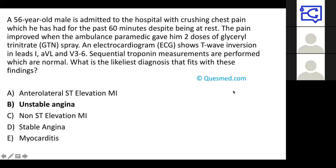We have a 56-year-old who's come in with crushing chest pain for the past 60 minutes at rest. The key is whether or not the pain is at rest — because if someone has pain on exertion, that's more likely to be stable angina, which is not an emergency in itself. The pain improves when the paramedic gives GTN spray, and there is T wave inversion in these leads, but the troponin is normal.